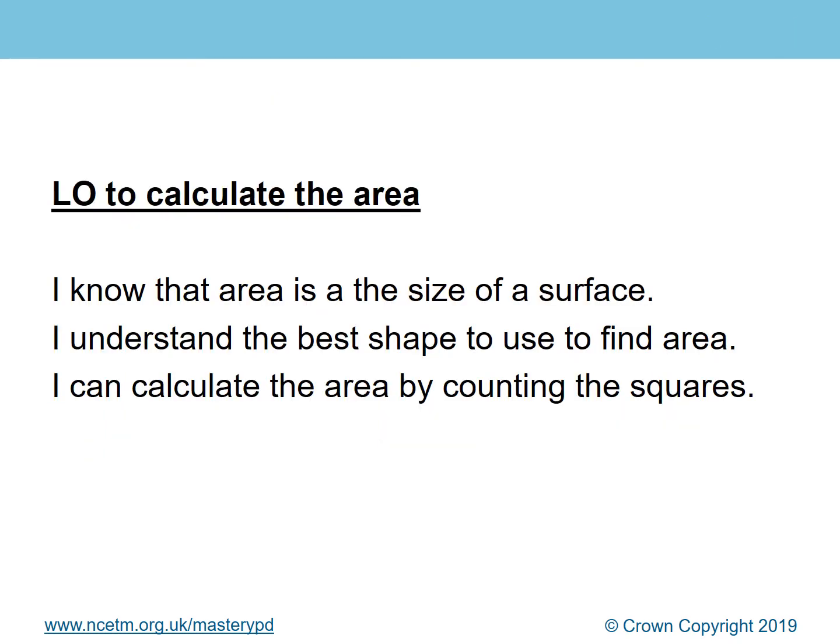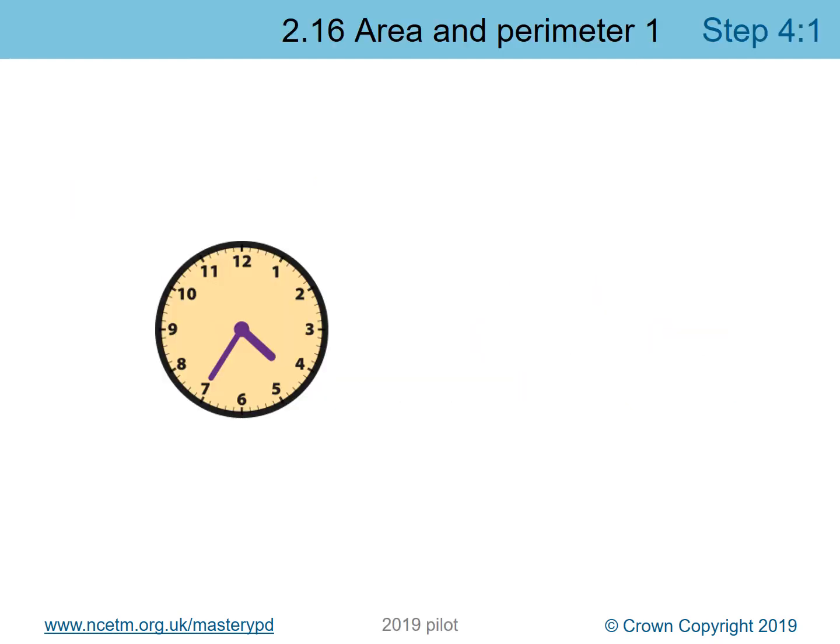Today we are going to begin to calculate the area of a shape. I'd quite like you to have a book or a flat surface near you to help with this next task. To begin with, you need to know that area is the size of a surface. We'll also calculate area by counting squares. If I'm looking at this clock and I was to measure the perimeter, I would get a piece of string and go around the outside edge to find the perimeter.